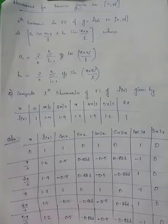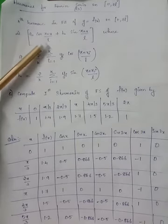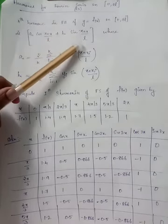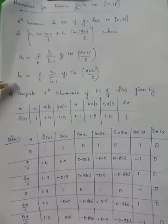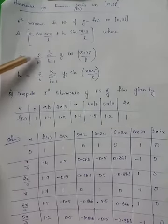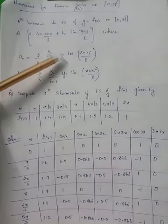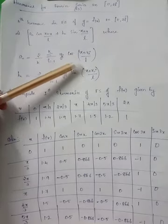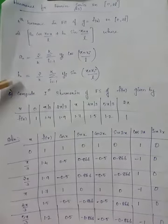The nth harmonic for a general interval 0 to 2l for a function y = f(x) is given by aₙ cos(πnx/l) + bₙ sin(πnx/l), where aₙ and bₙ are the corresponding Fourier coefficients, which take the form (2/k) Σᵢ₌₁ᵏ yᵢ cos(πnxᵢ/l), with a corresponding change for bₙ.